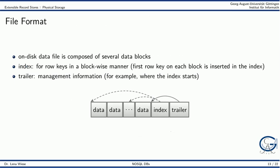Let's now have a closer look at the file format of the on disk data files. They are composed of several data blocks. For faster searches in the data file, there is an index at the end. In the index, there is an entry for each data block. That is, the first row key on each data block is inserted in the index. Moreover, there is a trailer for some additional management information, for example, where the index starts.